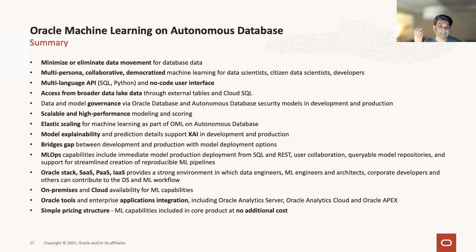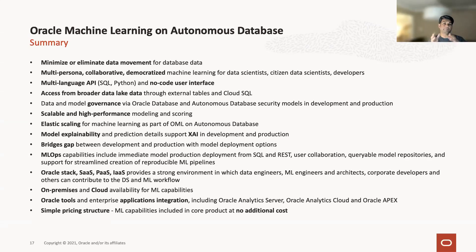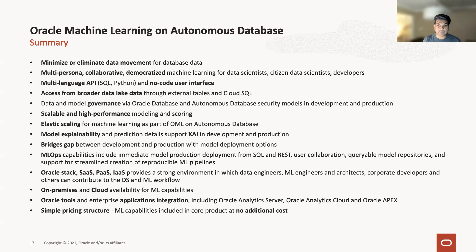You can access this from a broader data lake perspective — external tables, Cloud SQL, many different mechanisms. You can get data and model governance, providing security models for development and deployment, with proper lifecycle management. This is already present inside the Autonomous Database by default. You get scaling, bridging the gaps between development and production. You get MLOps — you can deploy your model using SQL, REST, queryable model repositories, and support streamlined creation of ML pipelines.